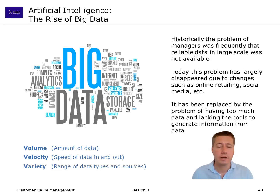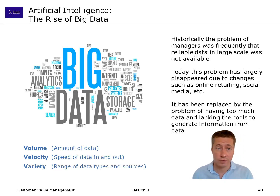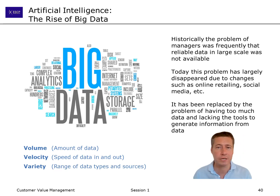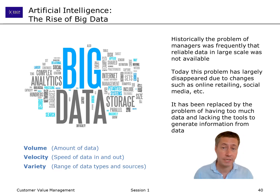Big data is usually characterized by three characteristics. There is a lot of data, so there is high volume. There is high velocity, which means the data changes very fast — new data is generated very quickly. Think of the number of videos uploaded on YouTube or the number of pictures posted on Instagram. And there is high variety — there are different sources: some is text, some is pictures, some is video.